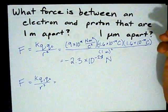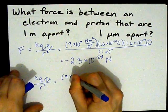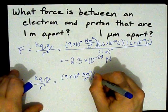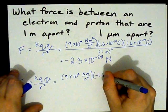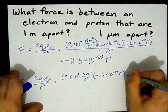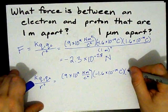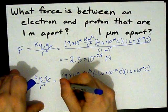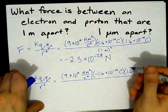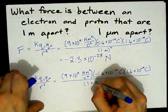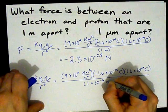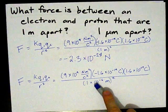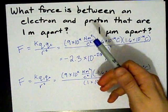Can you tell me what k is? That's right. It's 9 times 10 to the 9 newtons meters squared per coulomb squared. The charge on my electron is still negative 1.6 times 10 to the negative 19 coulombs. The charge on my proton is still positive 1.6 times 10 to the negative 19 coulombs. And the only thing that's changed is my distance. I am now 1 times 10 to the negative 6 meters apart. 10 to the negative 6 is the factor that micro means.